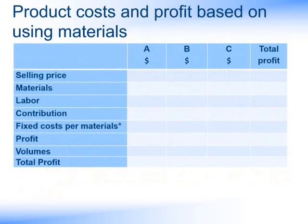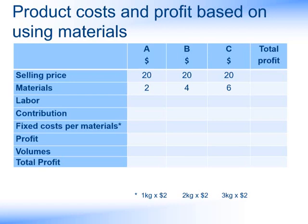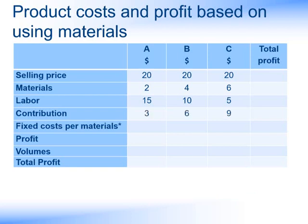Let's calculate the product costs and then the profit based on using materials as our overhead allocation method. As a starting point, let's put in our selling price of $20 for each product. Next, we can put in the materials. For product A, we were using one kilogram of material, costing $2. Materials for A is $2, and using the same process for B and C, we arrive at $4 for B and $6 for product C. We can do the same for labour. For product A, using three hours at $5 per hour is $15, and the same process for B and C. Taking our selling price, deducting the materials and the labour costs, we arrive at the contribution for each product towards the fixed costs.